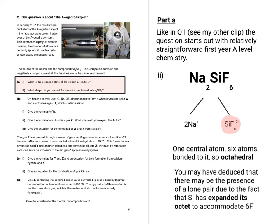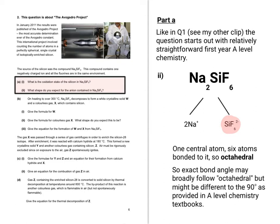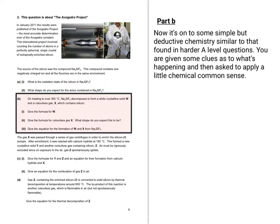On a slight side note, you may have worked out that there might be presence of a lone pair due to the fact that silicon has expanded its octet to accommodate six fluoride ions. But the 2- charge will also indicate two additional electrons. So although the exact bond angle might not be exactly the same as the 90 degrees that you come across in textbooks, the shape is going to be broadly octahedral. Don't forget they're asking you what shape do you expect.